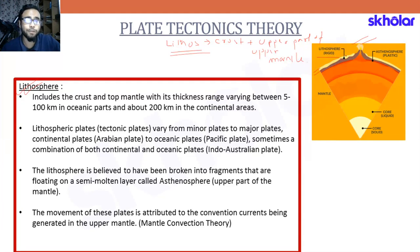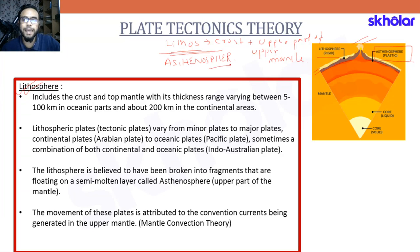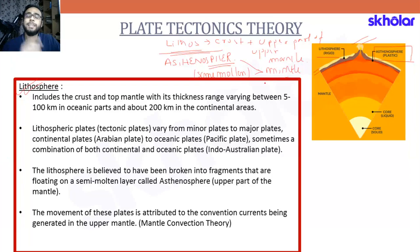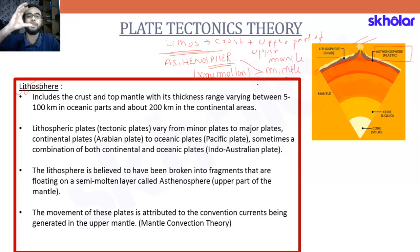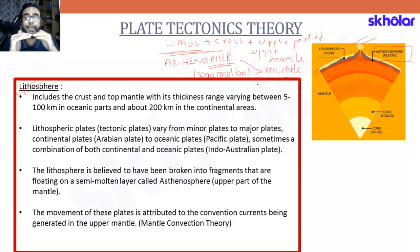Below the lithosphere, we see another layer called the asthenosphere. The asthenosphere is considered to be fluidic or semi-molten in nature, and it is present in the mantle region, just below the lithosphere. It is said that the lithosphere — the crust and upper part of the upper mantle — is moving because of the asthenosphere, since the asthenosphere is semi-molten in nature.